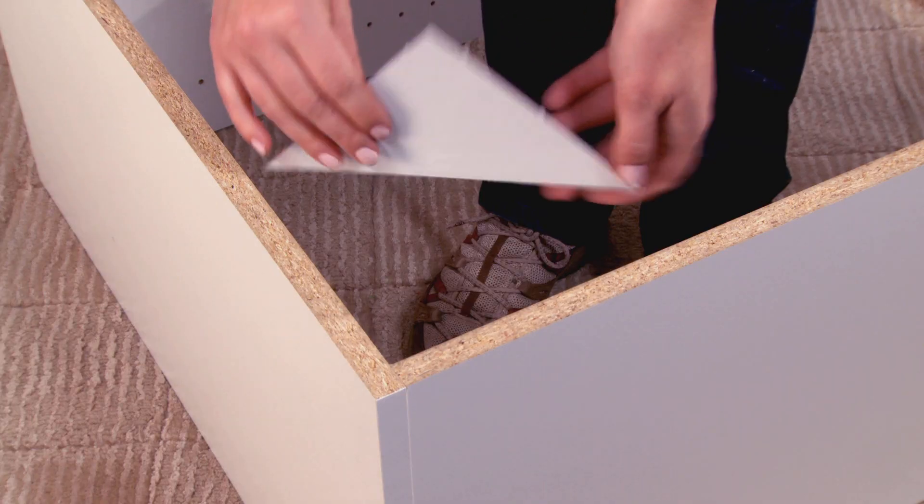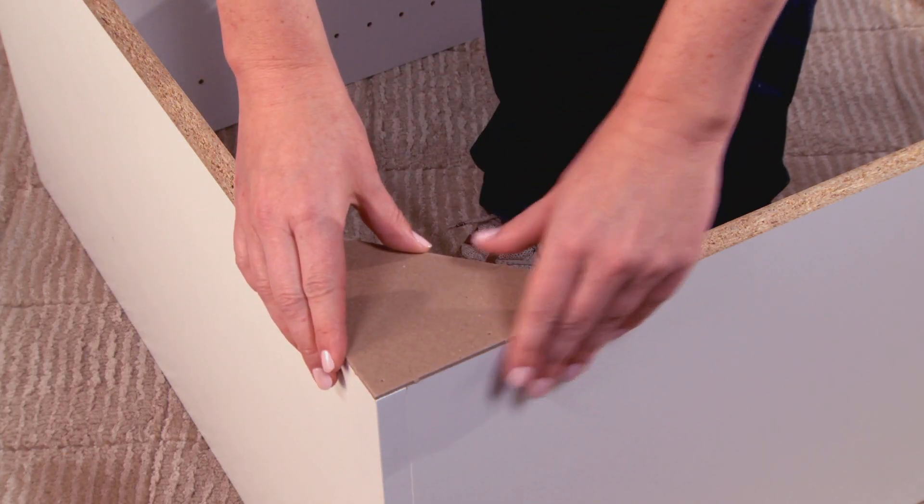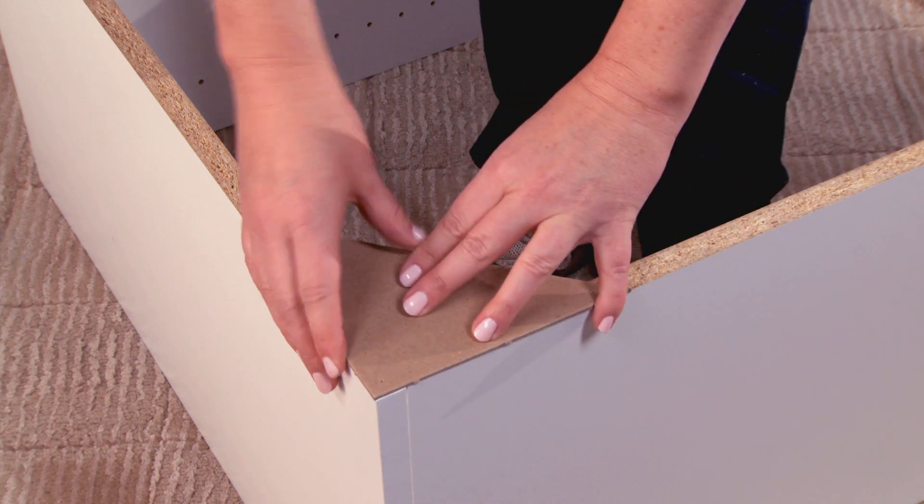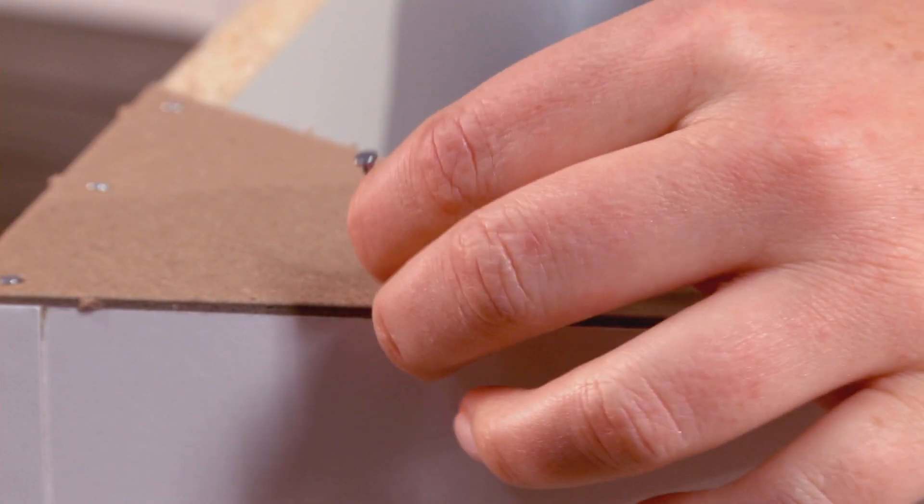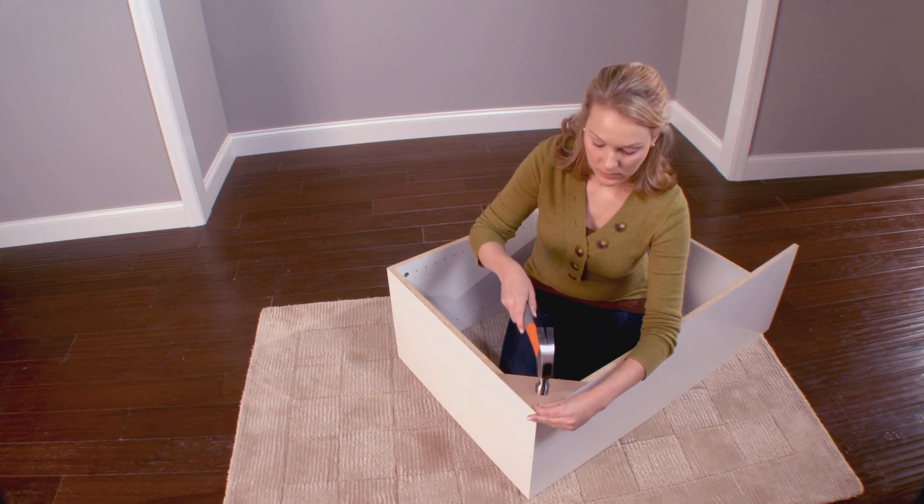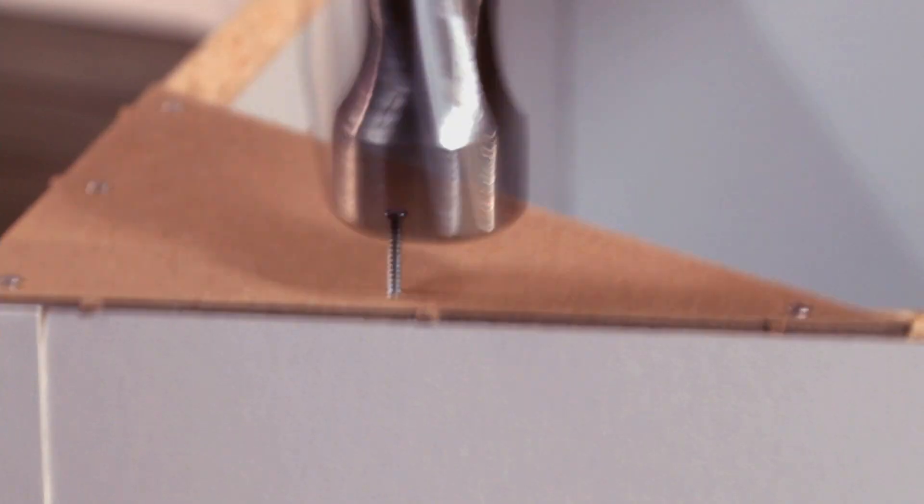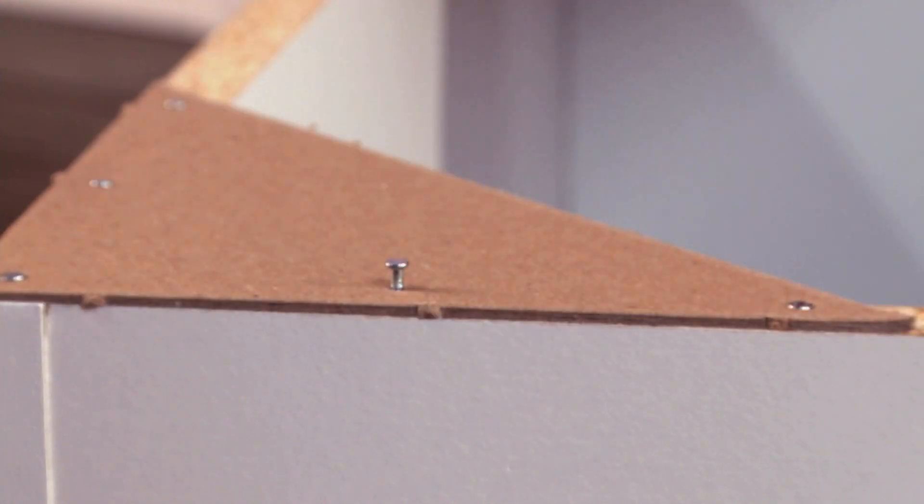Attach the gussets to all of the corners on the unfinished side of the unit. It's important to make sure the unit is square and not angled. Use a hammer and nails to secure the gussets. Be sure the nails go in straight and are not at an angle.